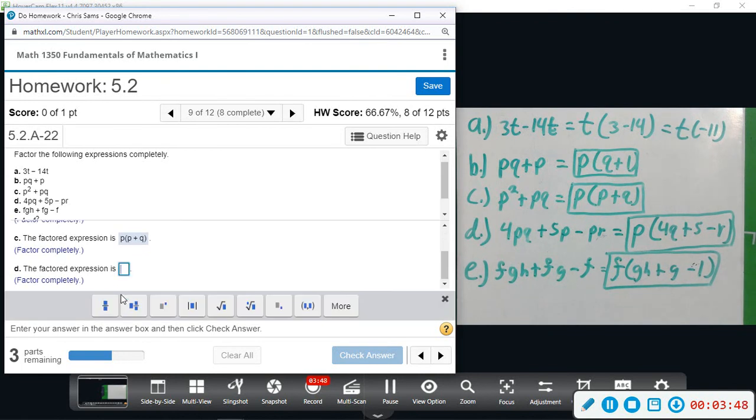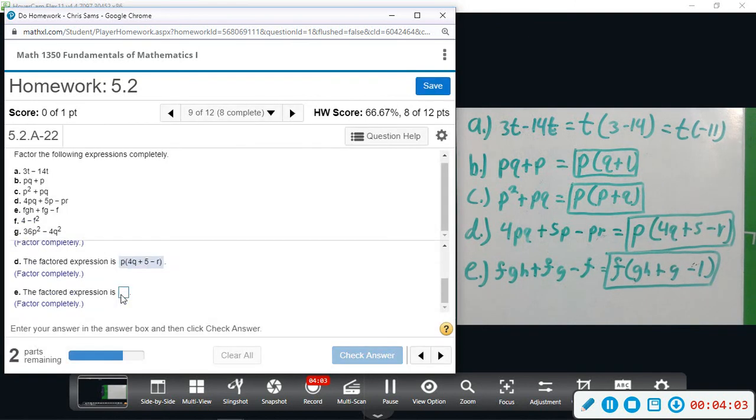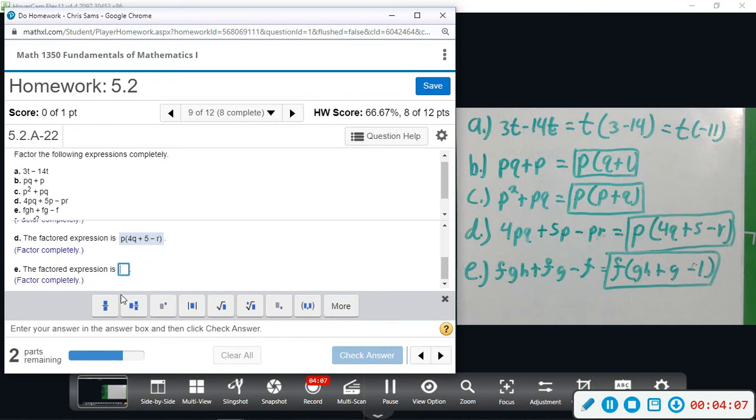On d we have p and then parentheses 4q plus 5 minus r. And then e, we have f and then parentheses gh plus g minus one.